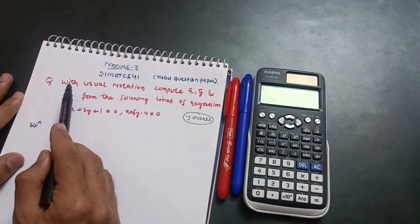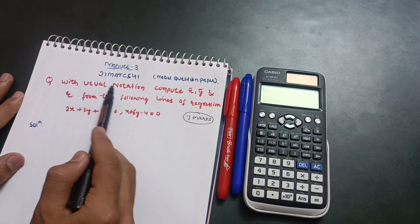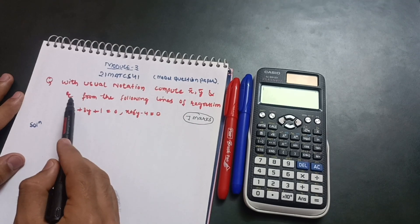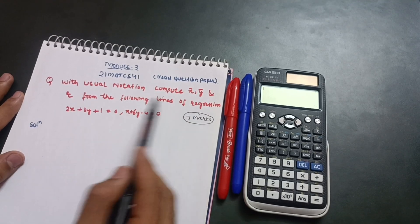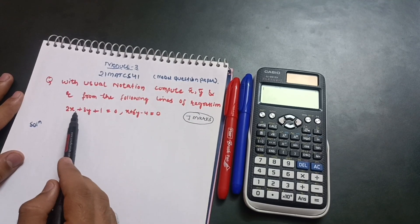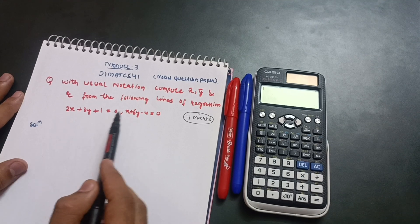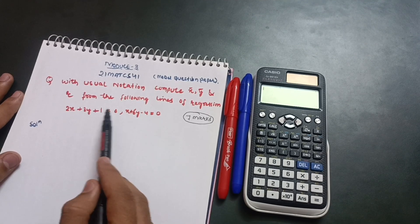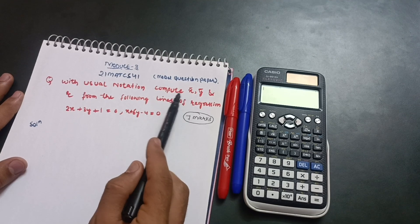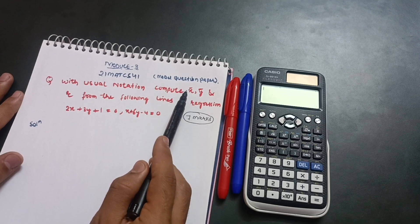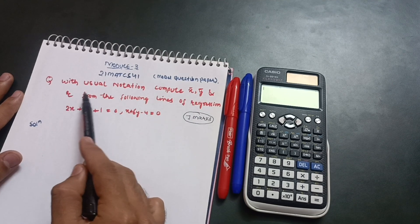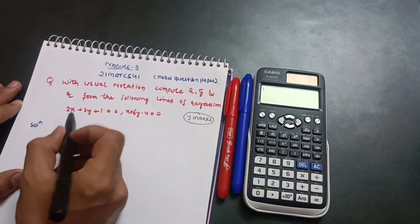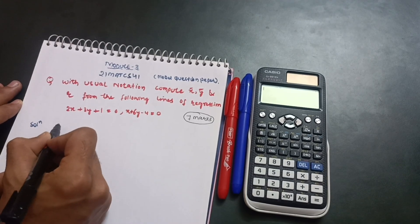This is a 7-mark question in the VTU examination. With usual notation, compute x̄, ȳ, and r from the following lines of regression: 2x + 3y + 1 = 0 and x + 6y − 4 = 0. We have to compute x̄, ȳ, and the coefficient of correlation r.